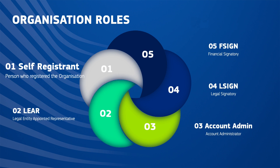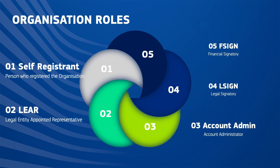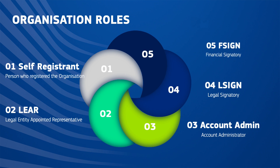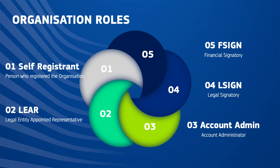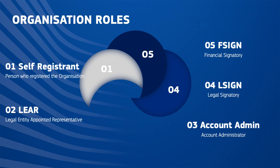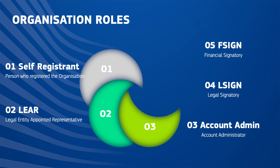The first is the Self-Registrant — the person who registered the organization and is the main organization contact until a LEAR is appointed. The second is the Legal Entity Appointed Representative (LEAR), being the main administrative contact between an organization and the European Commission, with ultimate responsibility for all organization's rights and obligations. The third is the Account Administrator, followed by the Legal Signatory (L-Sign) and the Financial Signatory (F-Sign).